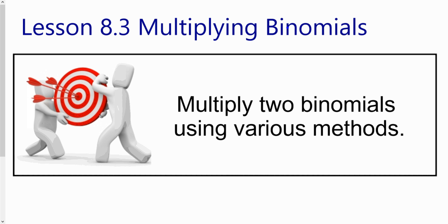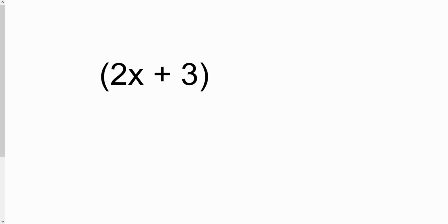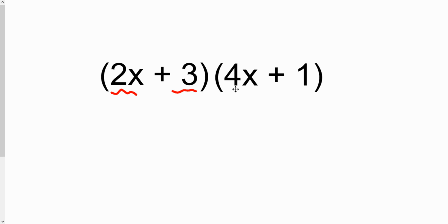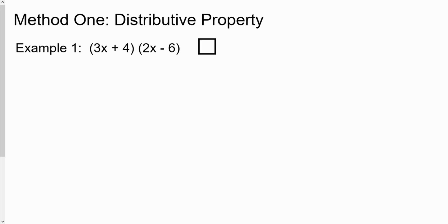This week we're looking at multiplying binomials. We've been looking at polynomial expressions with letters and exponents. Today we're going to focus on multiplying two binomials. A quick review: a binomial, like 'bicycle,' means it has two terms. We're going to take one binomial and multiply it by another. I'm going to show you four different methods, and you can choose which one you like best.